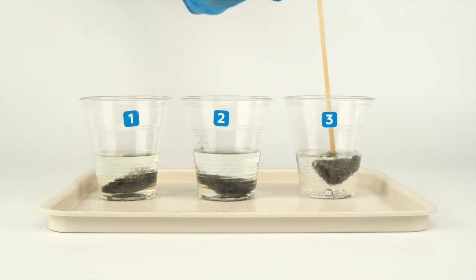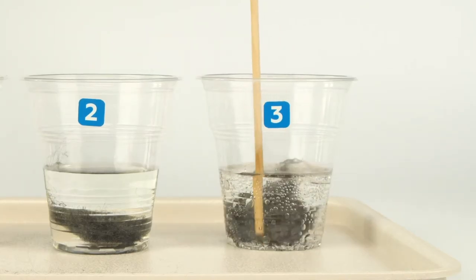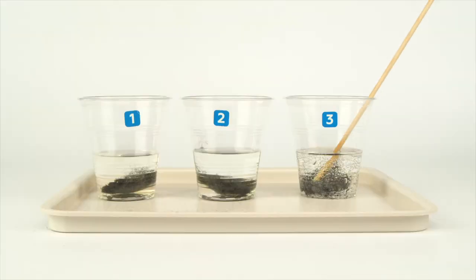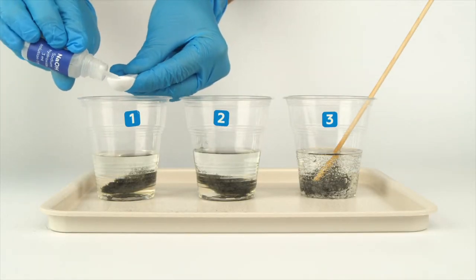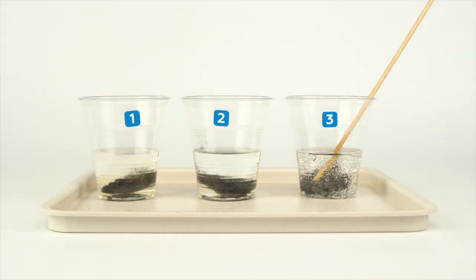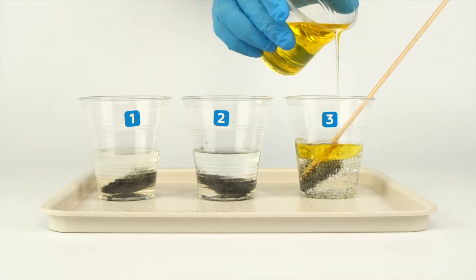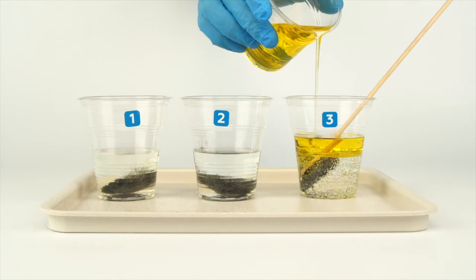Prod the iron wool in the third cup with the wooden stick until all the bubbles are forced out of it. Add one big spoon of sodium hydroxide solution to the first cup. Leave the second cup alone. Add enough vegetable oil to the third cup to completely cover the surface of the water.